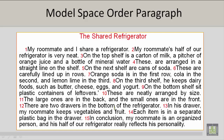Orange soda is in the first row, cola in the second, and lemon-lime in the third. On the third shelf, he keeps dairy food, such as butter, cheese, eggs, and yogurt. On the bottom shelf sit plastic containers of leftovers. These are neatly arranged by size — the large ones are in the back, and the small ones are in the front.